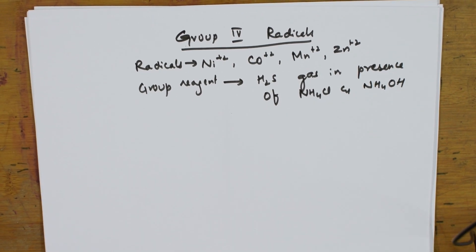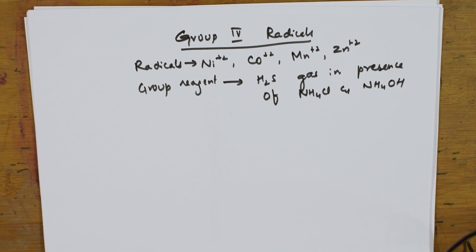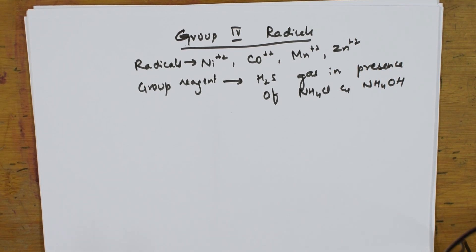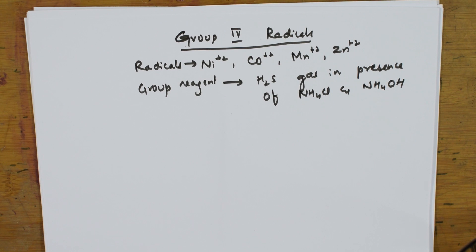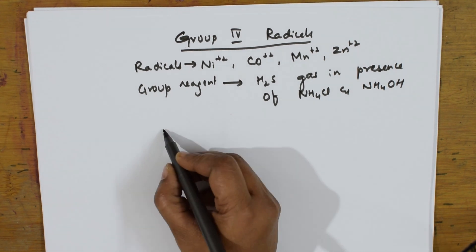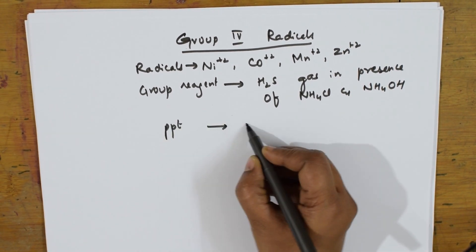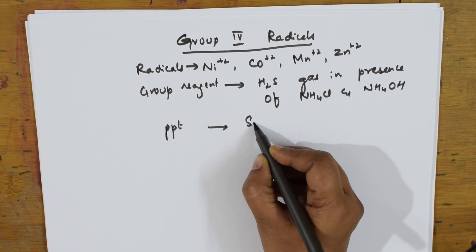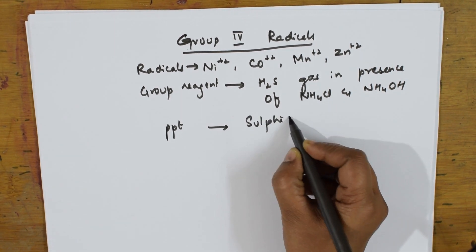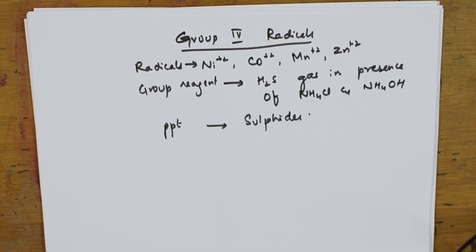After adding the group reagent to the solution containing the respective cations, we get different colored precipitates. The cations are going to precipitate in the form of sulphides in Group 4.